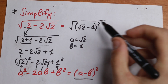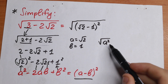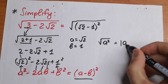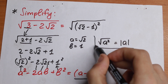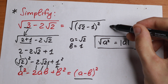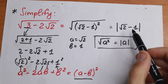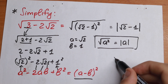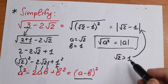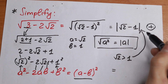We know that the square root of x squared equals the absolute value of x — the square root sign and the square cancel, leaving the absolute value. Applying this rule, we get the absolute value of (square root of 2 minus 1). Since square root of 2 is greater than 1, the expression inside is positive, so we can drop the absolute value brackets.